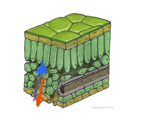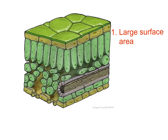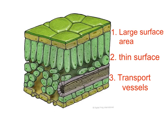Let's summarise the key adaptations of the leaf for exchange, as we did for the lungs. Firstly, leaves have a large surface area — it's their flat shape that gives them this. Secondly, the flattened shape means they have a thin surface, so nowhere is too far from the outside world; the distance for CO2 and O2 to travel is low. Thirdly, they have a good transport system: every part of the leaf is close to a vein containing xylem to enable water exchange.